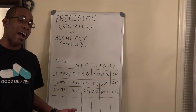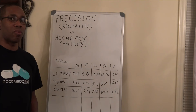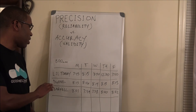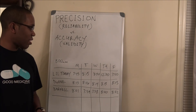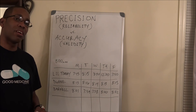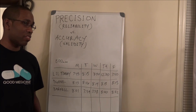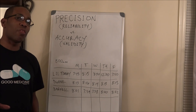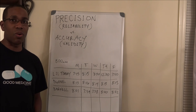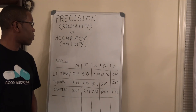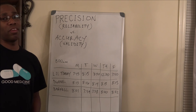So therefore, he's going to be accurate and valid. He's also precise and reliable, because all those times are all near themselves — they're close to each other. So he's going to be precise and reliable, which is the exact same thing, because all those numbers are together. And he's going to be accurate and valid because it's near the intended goal. That's essentially the difference between precision and accuracy, or how they like to trick you: reliability and validity.